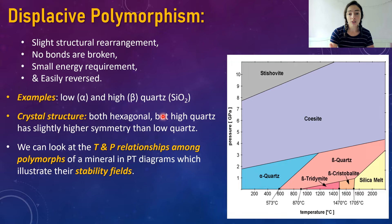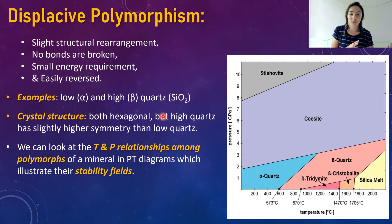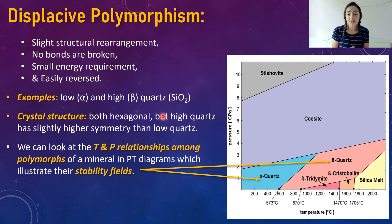Both alpha and beta quartz are hexagonal in crystal system, which is actually uncommon — it's not typical for polymorphs to be in the same crystal system. High quartz or beta quartz just has a slightly higher symmetry than low quartz. Higher symmetry means you can perform slightly more symmetry operations with beta quartz than with alpha quartz. We can see the stability fields of alpha and beta quartz in the diagram.